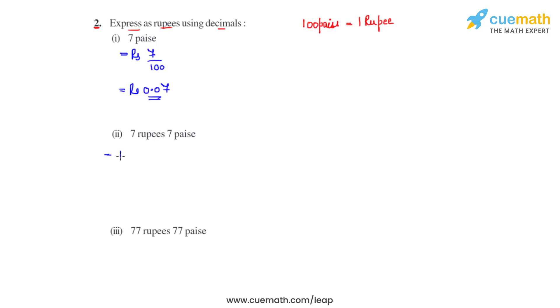Coming to the second bit, we have rupees 7 plus 7 paise that can be written as rupees 7 by 100, so that will give us rupees 7.07 as the answer which is in decimal form because 7 over 100 is 0.07, adding that to 7 gives us 7.07.